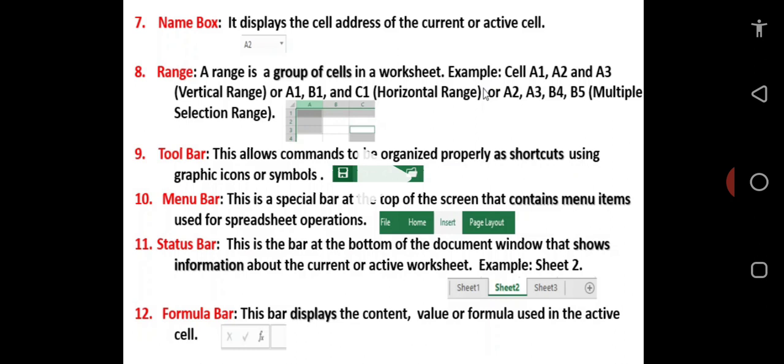The formula bar. This bar displays the content, value, or formula used in the active cell. When it displays content, it means you are processing alphabetic data like your name, your address, a sentence, or data that deals with characters and symbols.